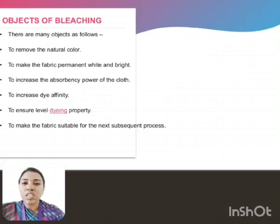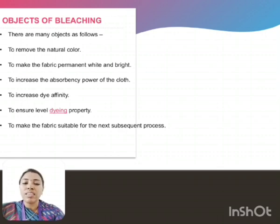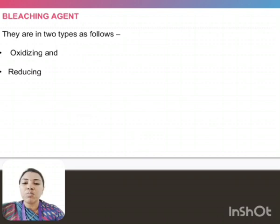The main objectives of the bleaching process are: to remove the natural color of the material, to make the fabric permanent white and bright, to increase the absorbency power of the cloth, to increase the dye affinity, to ensure level dyeing property, and to make the fabric suitable for the next subsequent process. These are the main objectives of the bleaching process.